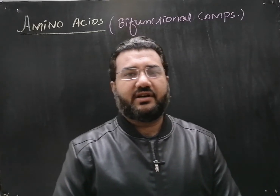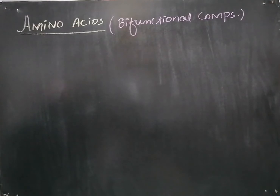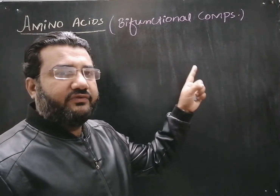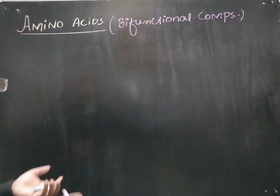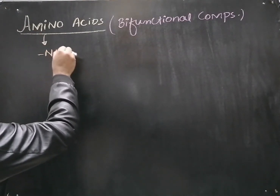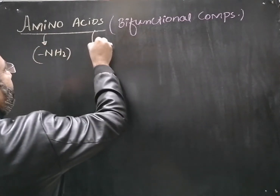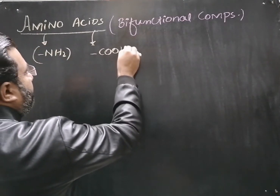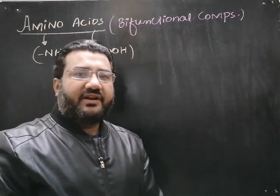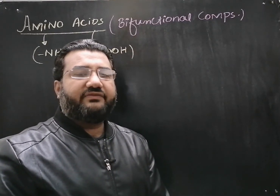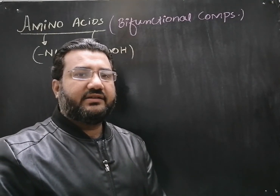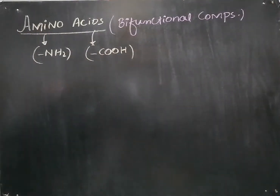Today we are going to start a very important topic: amino acids. Amino acids are bifunctional compounds, meaning they have two functional groups, which is quite clear from their name — they have one amino group and one acidic group, which is the carboxyl group. Amino acids can be defined as the small bifunctional molecules that consist of a basic amino group and an acidic carboxyl group.